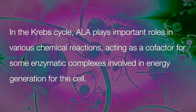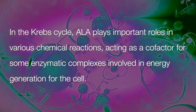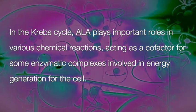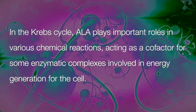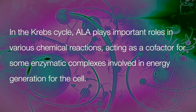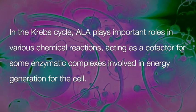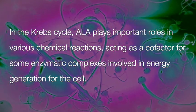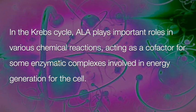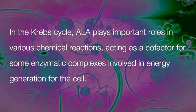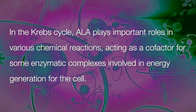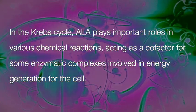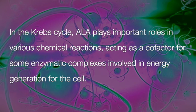In the Krebs cycle, which happens in the mitochondria and is also called the citric acid cycle, ATP — the energy currency — is generated. ALA plays an important role in various chemical reactions in the Krebs cycle, acting as a cofactor for some enzymatic complexes involved in energy generation for the cell.